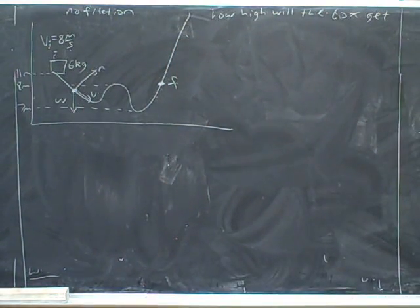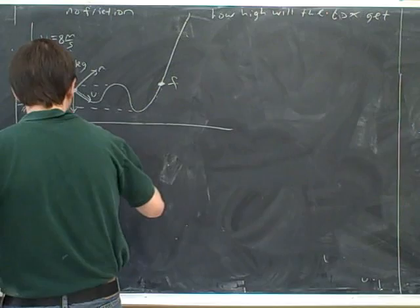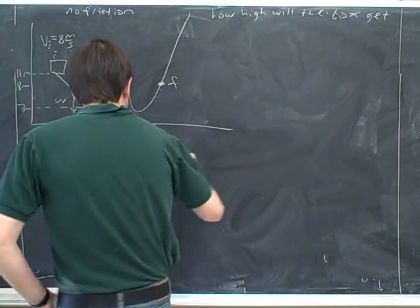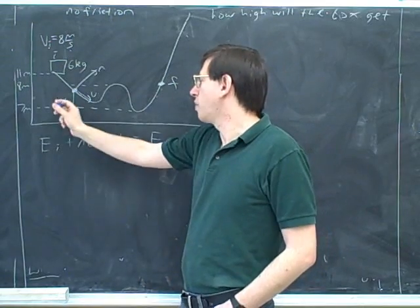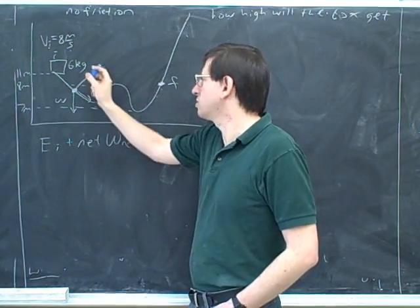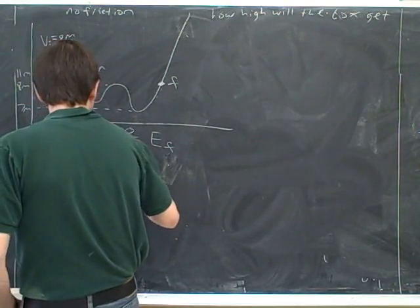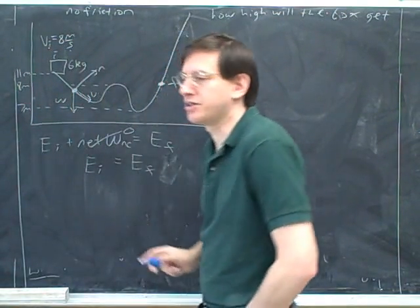So now we want to write in EI equals EF, because there's no non-conservative work. So we're going to reverse this. Good. So our basic framework for this type of problem is this. But you've already figured out that the weight isn't doing any work that we would plug in here, because the weight is conservative. And the normal force is non-conservative, but it's not doing any work, because it's perpendicular to the motion. So you're right that this term is going to turn out to be zero. That gives us our basic conservation of energy equation.